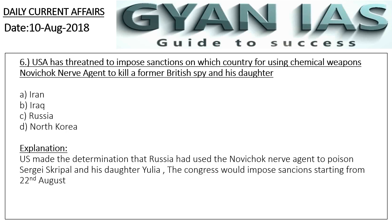Question 6: The USA has threatened to impose sanctions on which country for using the chemical weapon Novichok nerve agent to kill a former British spy and his daughter? Options: Iran, Russia, or North Korea. The correct answer is Option C — Russia.